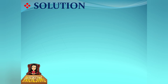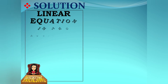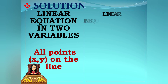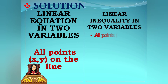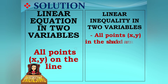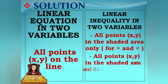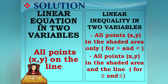In terms of solution: a linear equation in two variables has all points (x, y) on the line as solutions. A linear inequality in two variables has all points (x, y) in the shaded area only for greater than and less than symbols, or all points in the shaded area and on the line for greater than or equal to and less than or equal to symbols.